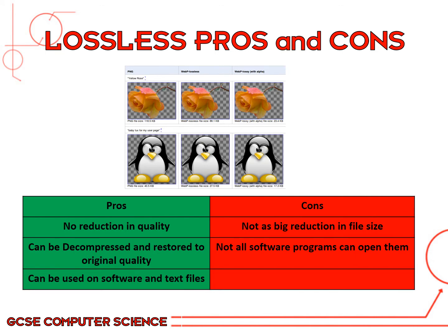Now let's look at lossless with its advantages and disadvantages. You can see in the example how this works — if you've seen a PNG file before, many of them have the background removed. This is what's called redundant data. Nobody needs to see a white or transparent background, so you can remove all of those pixels to reduce the file size — it's unnecessary data.